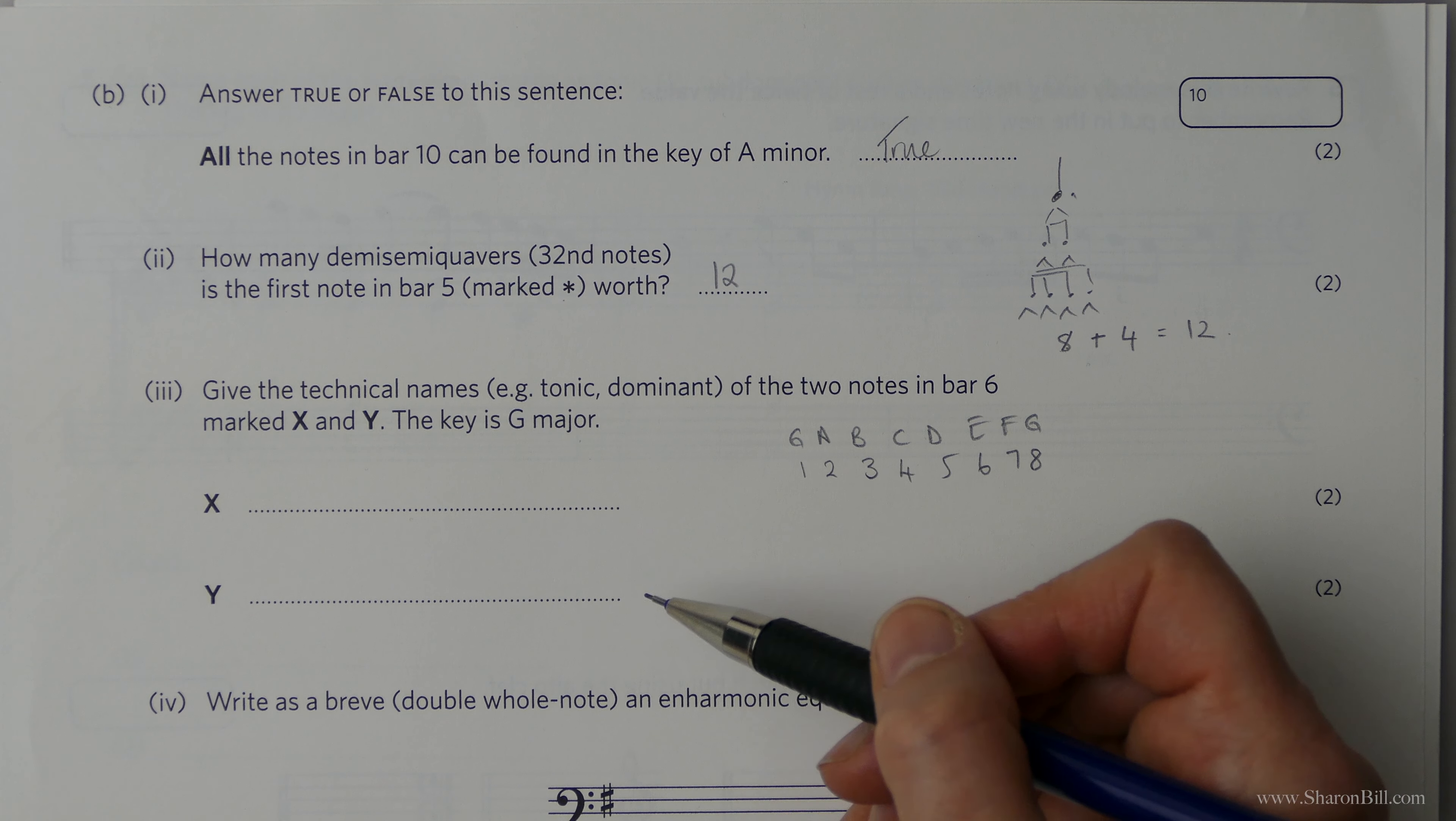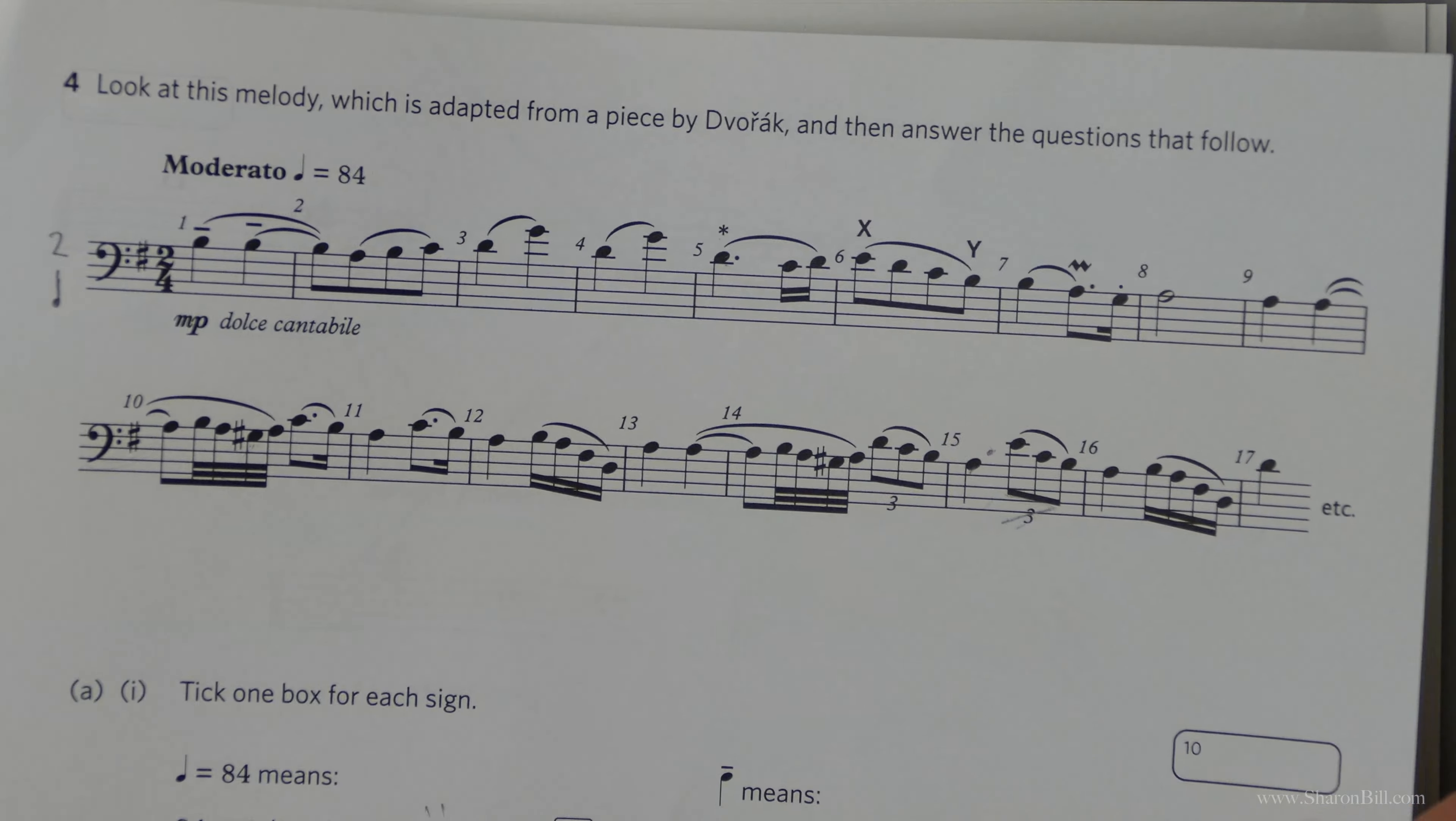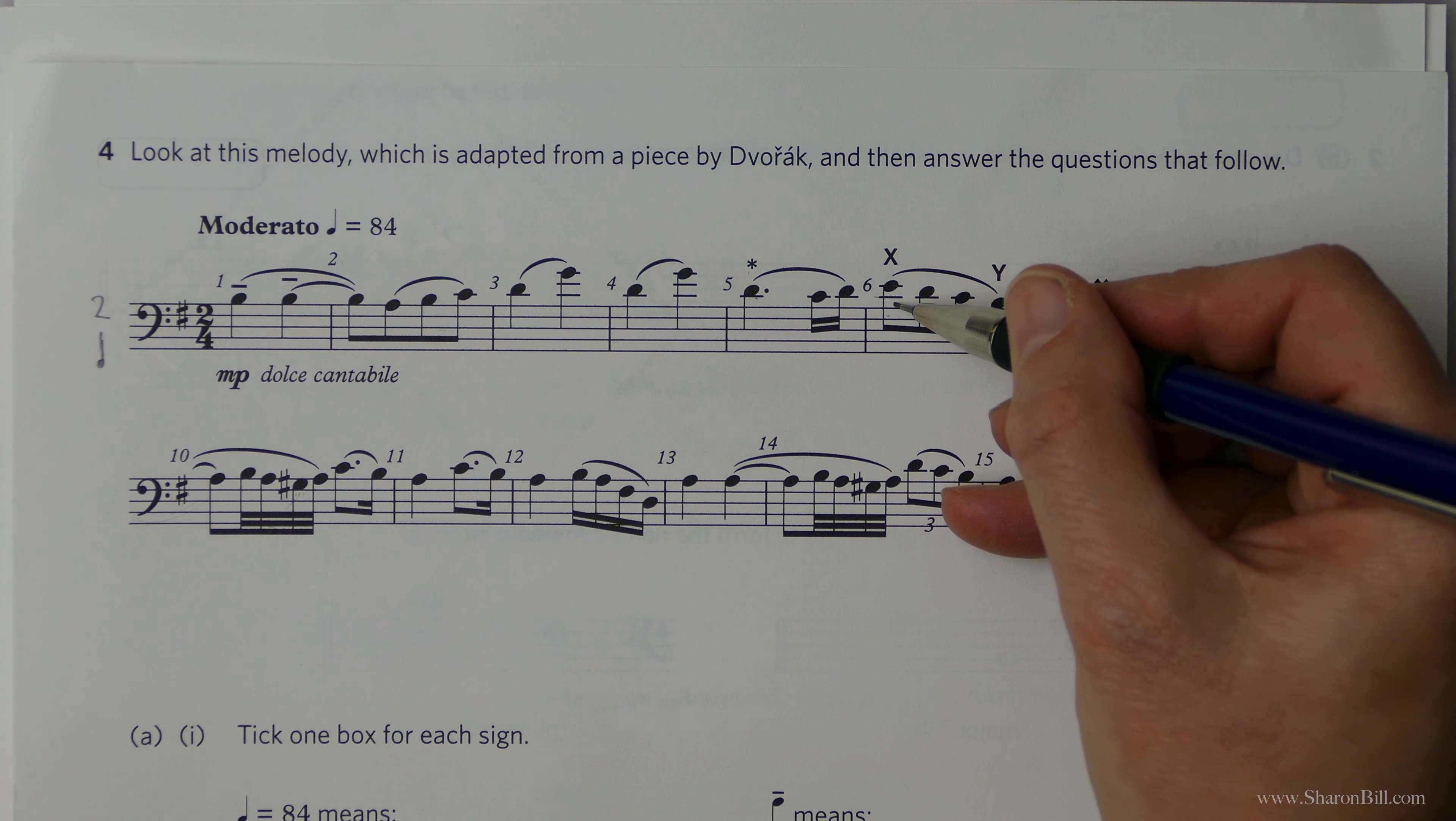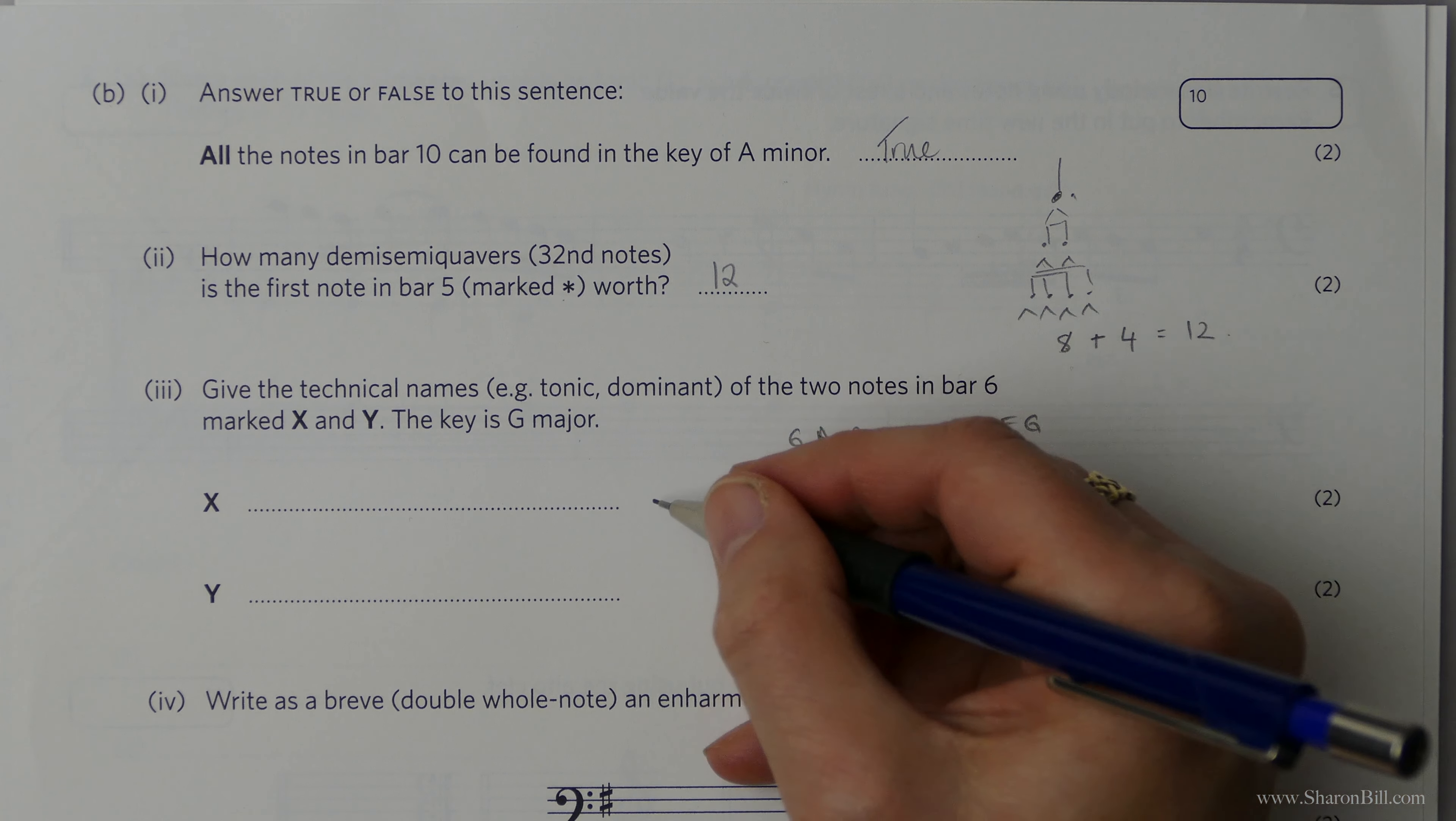So then let's see what notes we're looking at first. First of all. So X, we're in the bass clef, so that's C, D, E. So let's count from the G. One, two, three, four, five, six. E is the six, so that's correct.